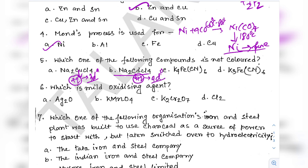Question 17: Diamagnetic lanthanide ions among the following — Lu³⁺ and Yb²⁺ are the answers. Try to remember these factual items: the diamagnetic lanthanoids and their oxidation states are very commonly asked in previous year questions in NEET and JEE as well.